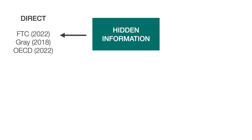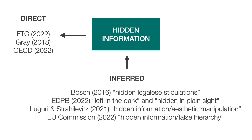After Gray 2018's original use of this pattern name, we found direct instances of the same pattern in the FTC and OECD reports. Additionally, we found that other elements of patterns in the literature could be used to infer addressing the same pattern, such as Bosch's hidden, Ligali's stipulations, or Liguria and Strahlowitz's combination of hidden information and aesthetic manipulation. The final ontology includes these direct and inferred mappings, including identification of the original source of each pattern.